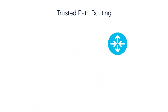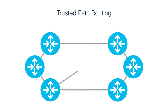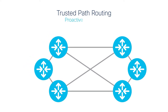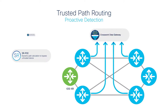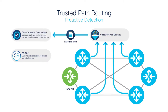With the help of Trusted Path Routing, we show having continuous evaluation on the integrity of routers in the traffic path. We can dynamically steer sensitive flows to only take the path with verified devices. The core components of the solution are network devices running the secure iOS XR operating system, a programmable segment routing network, and a trust verification service using Cisco CrossWork Trust Insights.